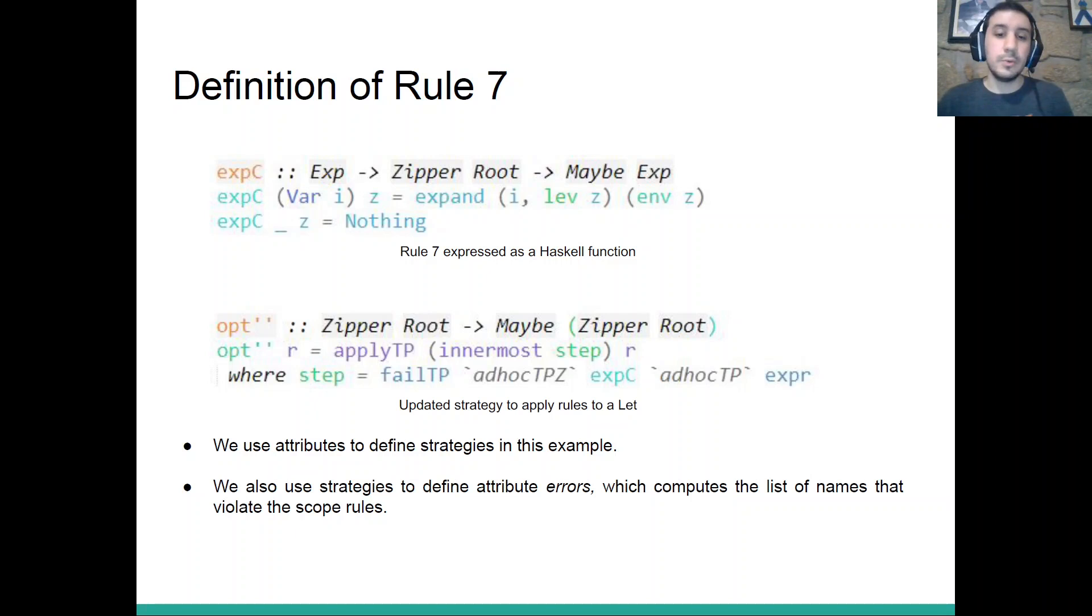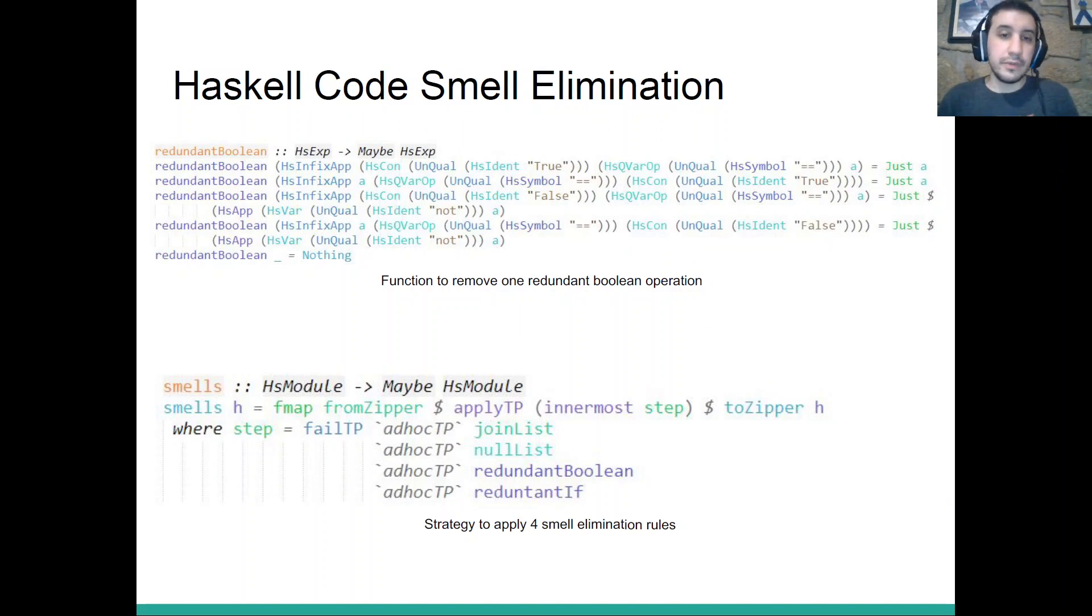We also have an example in which we do the reverse, we define an attribute using strategies. And the attribute we are defining is errors, which computes the list of names that violate the scope rules, that is, the list of errors, things like double declaration of variables or usage of variables that were not declared.